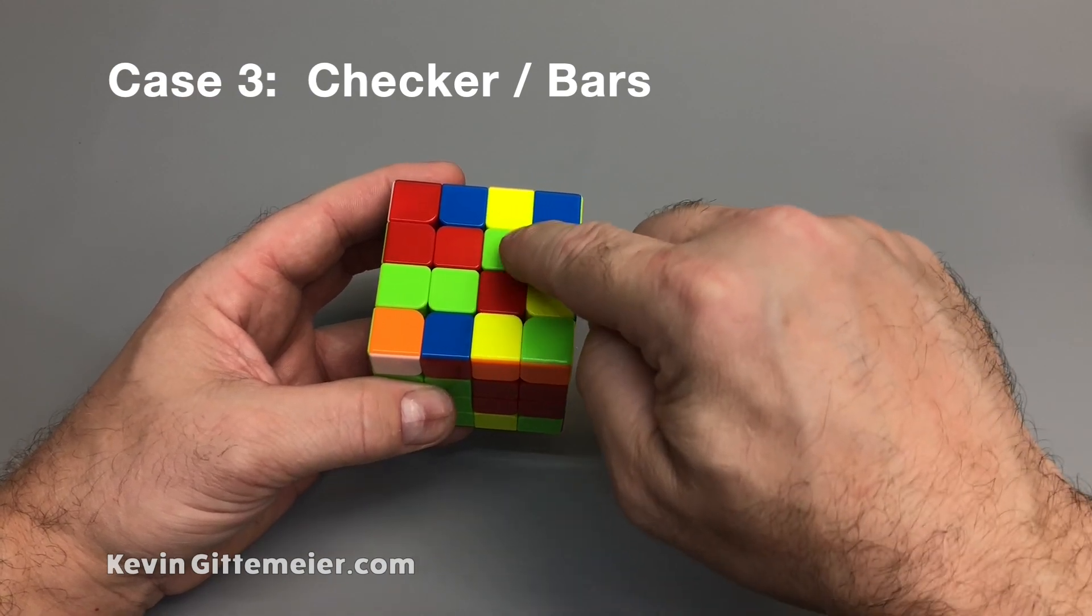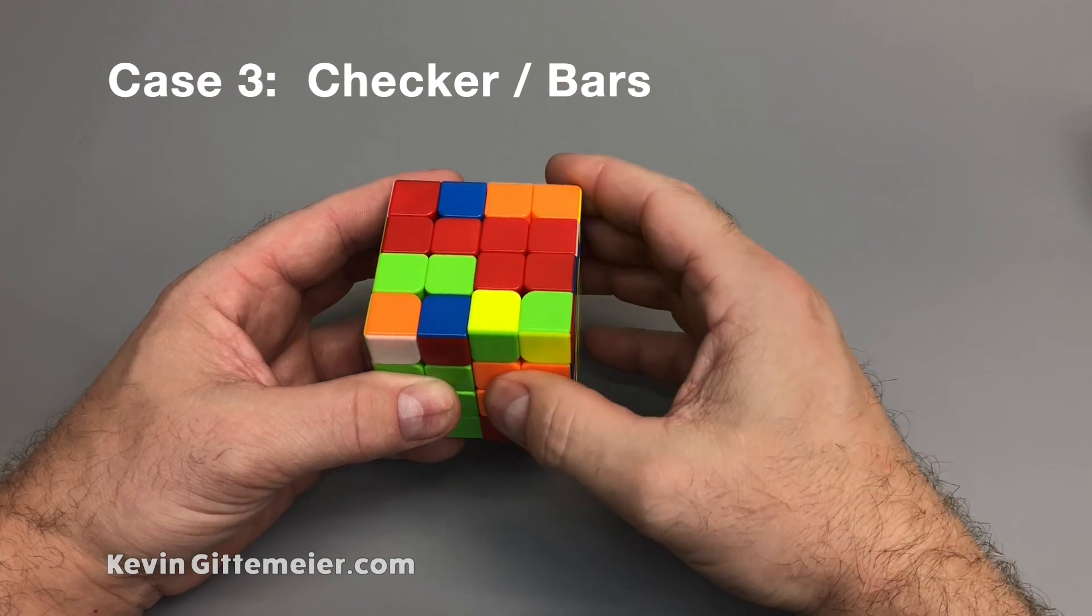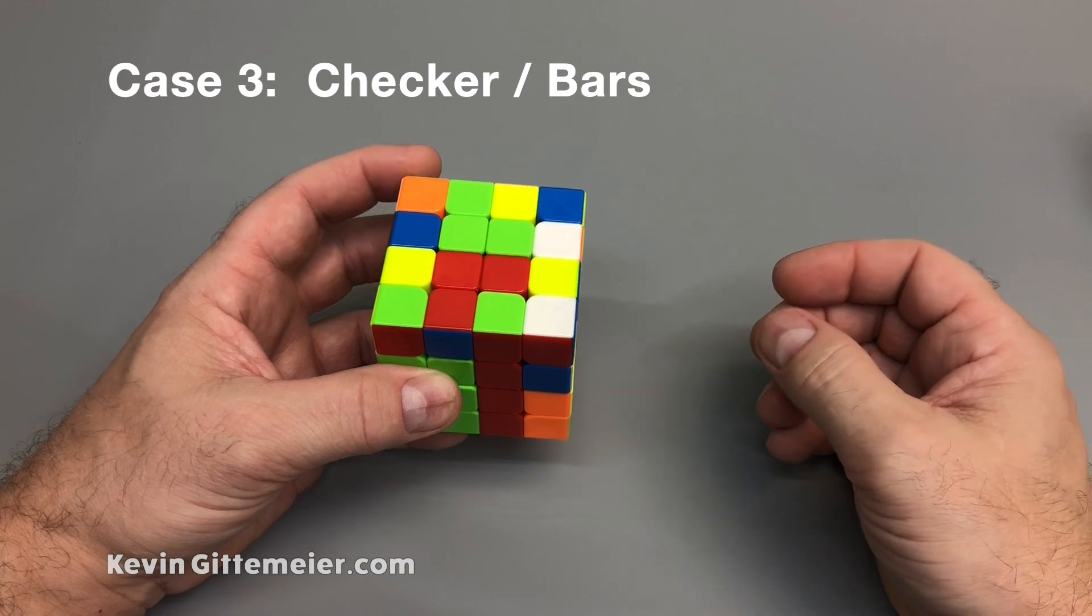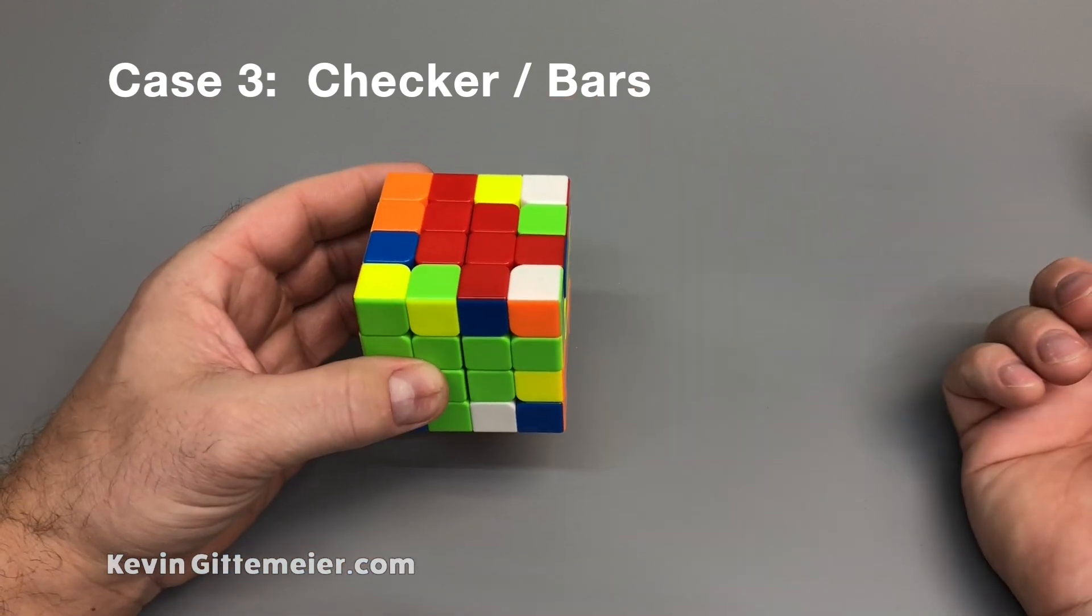So in order to do that, I notice the placement of this green in this working slot. Then when I slice up, I just turn the top to make sure that green will match when I slice back. And then once I have the bar solved, I solve my centers.